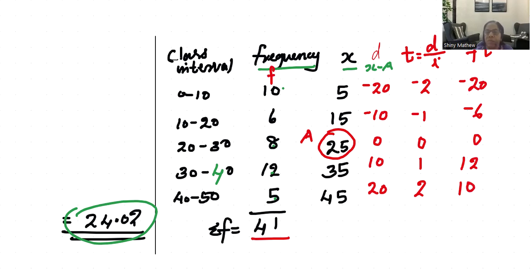Now we calculate sigma Fd' divided by sigma F. Separating negatives and positives: negative 20 plus negative 6 equals negative 26. 12 plus 10 equals 22. The total is negative 26 plus 22, which is negative 4.